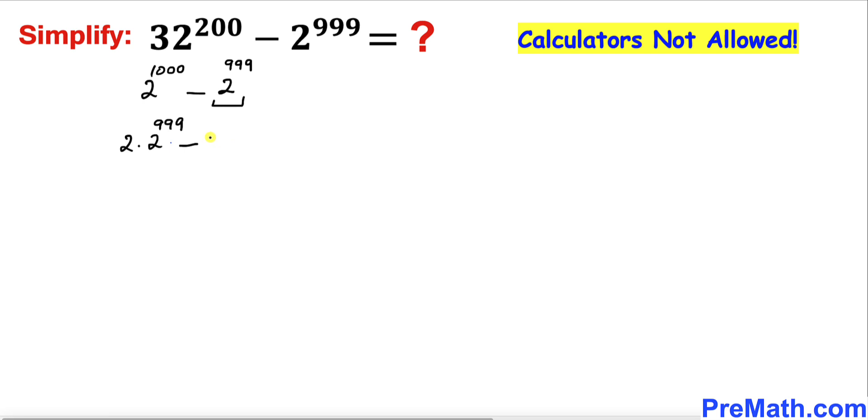And we can write 2 to the power 999 as 1 times 2 to the power 999. Now we can see that 2 to the power 999 is in common. Therefore we can factor out 2 to the power 999 and we are left with only 2 minus 1. Now we can see 2 minus 1 is just simply 1.